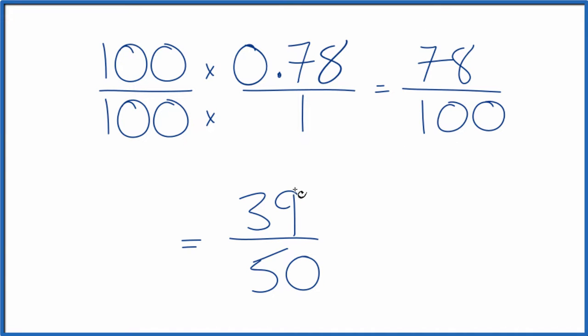And all of these are equal. 39 divided by 50, 78 divided by 100, that gives you 0.78. This is Dr. B. Thanks for watchin'.